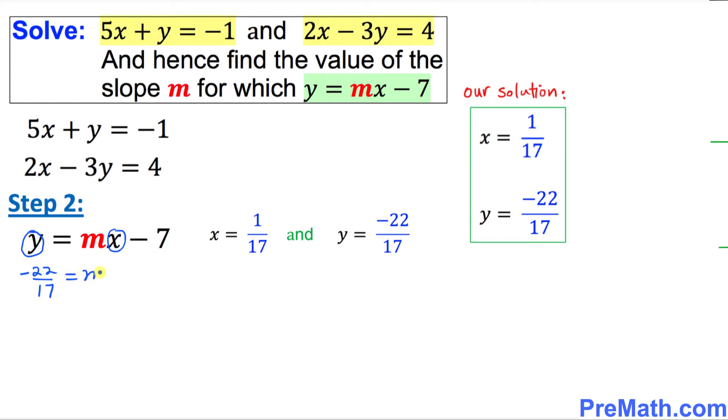Negative 22 over 17 equal to m times x is 1 over 17 minus 7. Let's simplify this thing, so that is negative 22 over 17 equal to m over 17, and I can write negative 7 as 7 over 1.